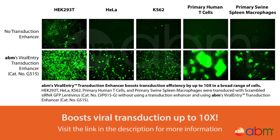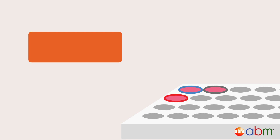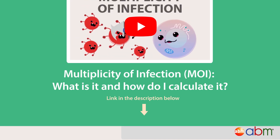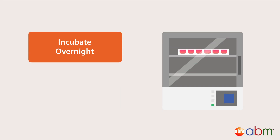Prepare the cultured wells with the following controls: a positive control well containing a GFP control lentivirus and the appropriate blank control lentivirus, and a negative control well containing uninfected cells. Based on the optimal MOI that you have calculated, add the appropriate volume of virus to infect the cells in the wells. For more details on how to determine the MOI for your infection experiment, watch our video on multiplicity of infection. Incubate the cells with the virus overnight at the appropriate temperature and CO2 conditions.